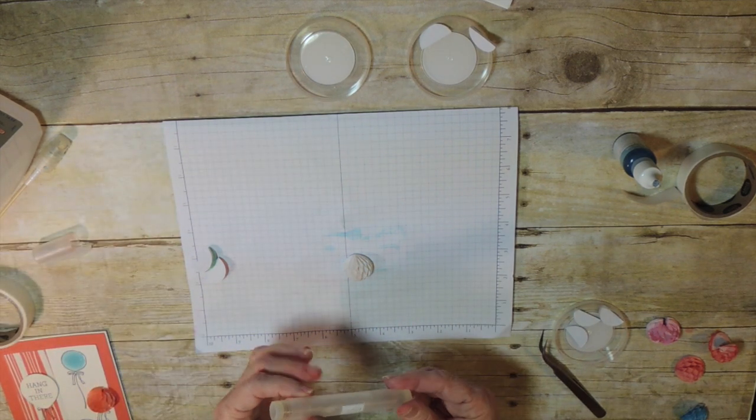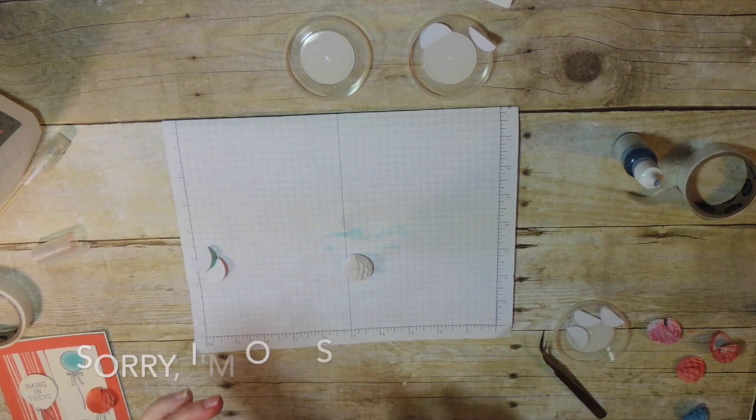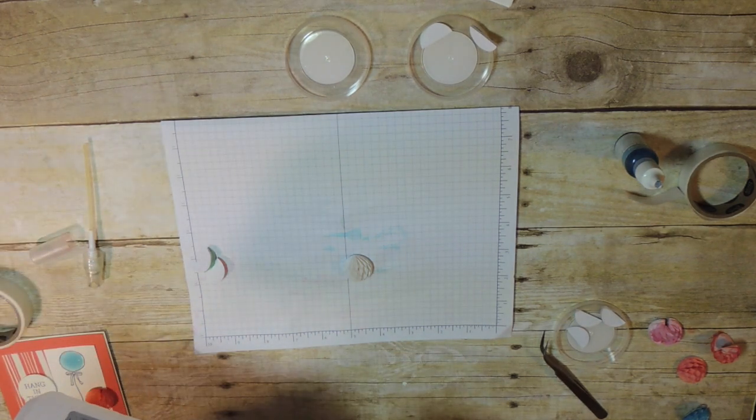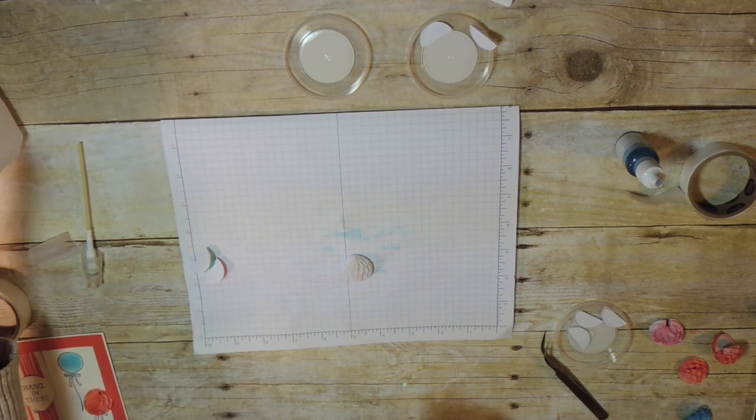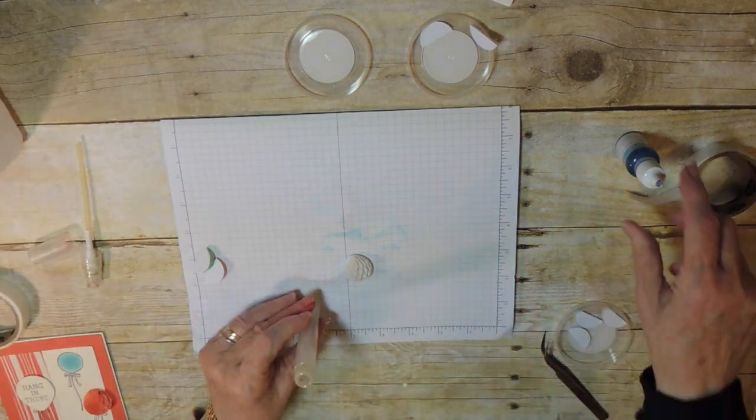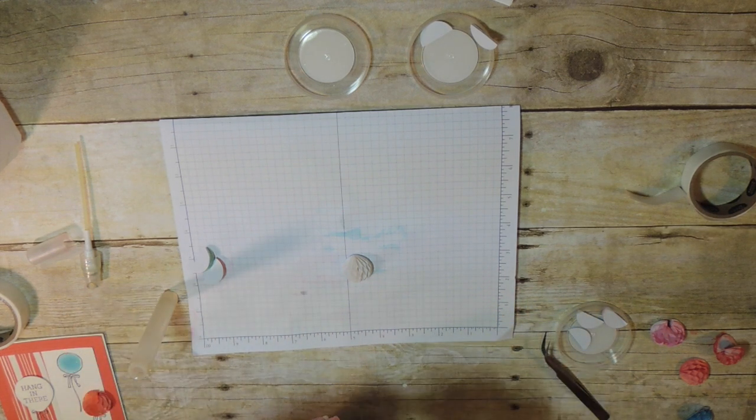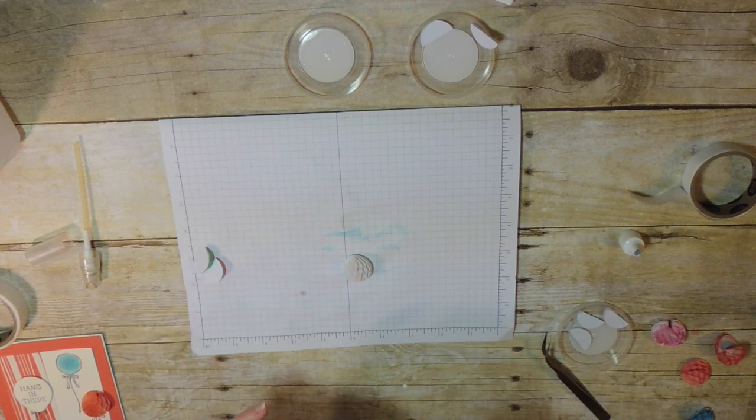We're going to use one of our Spritzers, Stampin' Up Spritzers, and I've already filled this about a third, not quite halfway, with water, and then I'm going to add just some basic rubbing alcohol, and then the magic comes from using our reinker, the Marina Mist reinker in this case.